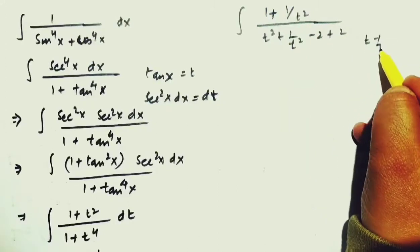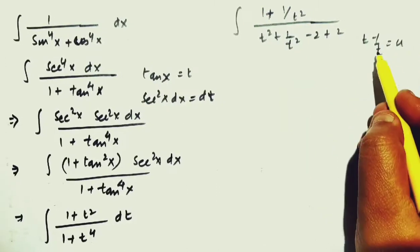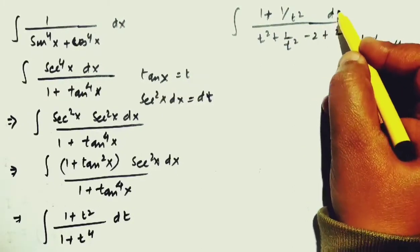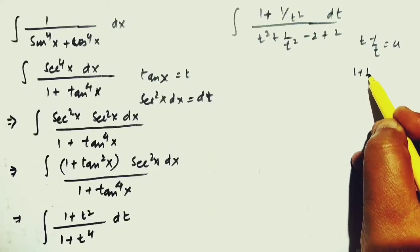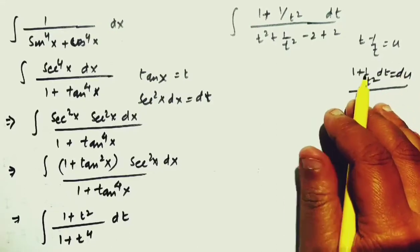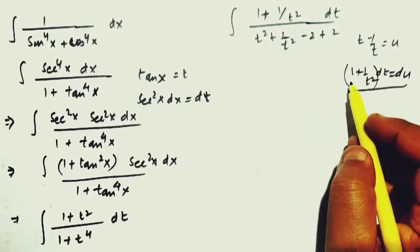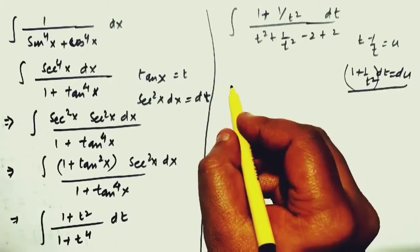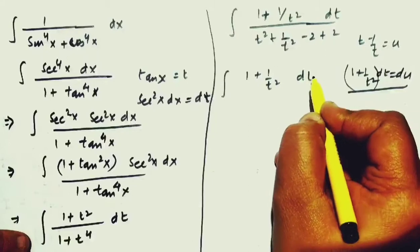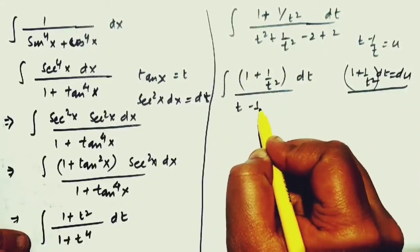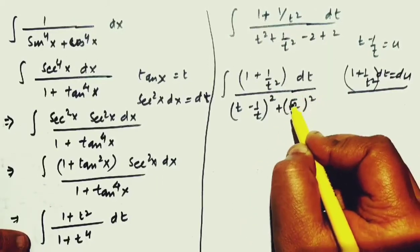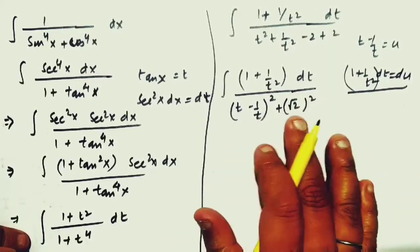Look very carefully. If I assume t minus 1 by t equal to some function u, then 1 plus 1 by t square will be replaced. Here dt is left. Toh, 1 plus 1 by t square dt equal to du. Toh, ye term humne replace ho. So, hum minus wala perfect square banayenge. That is, 1 plus 1 over t square dt divided by t minus 1 upon t square plus root 2 whole square, such that it will look like a certain formula.